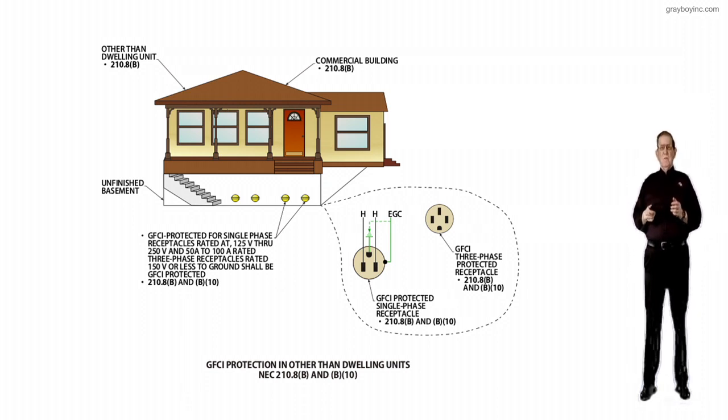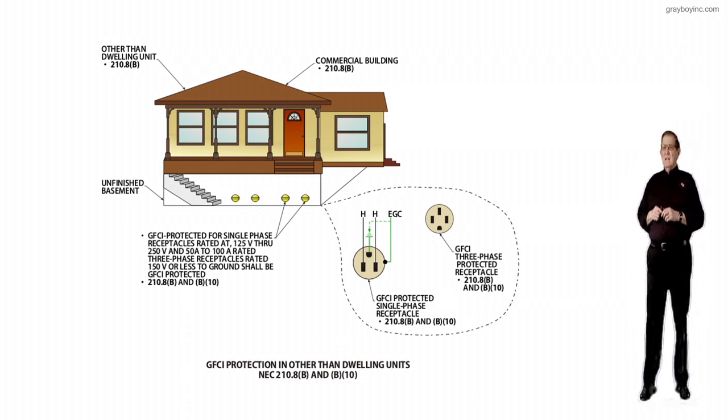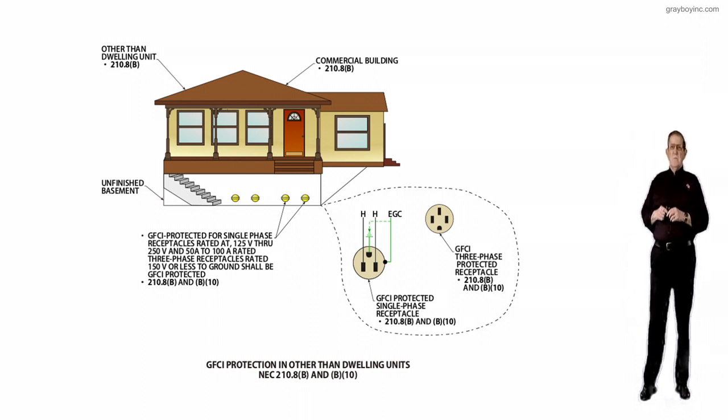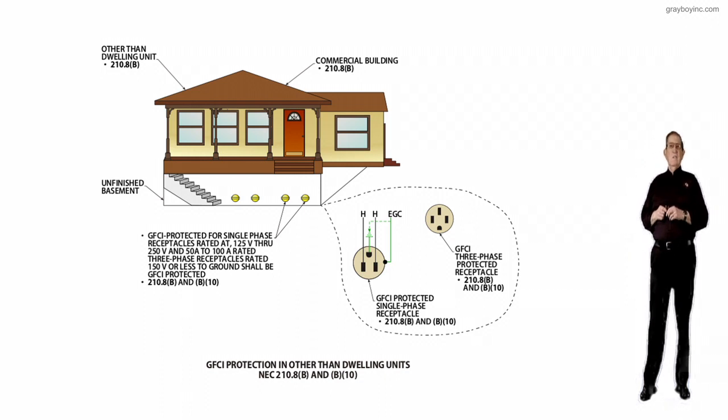The purpose of change is a revision that has been made to clarify that ground fault protection for personnel should be provided on all 120-volt through 250-volt receptacles installed in unfinished basements, as well as three-phase receptacles rated at 150 volts or less to ground at 100 amps or less.